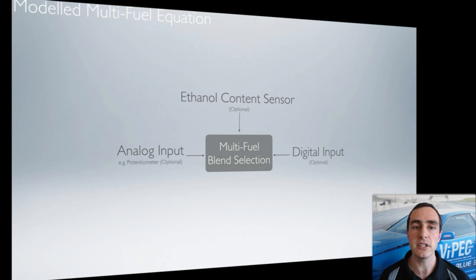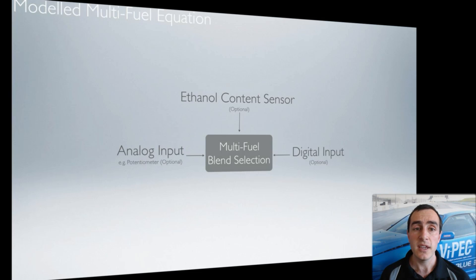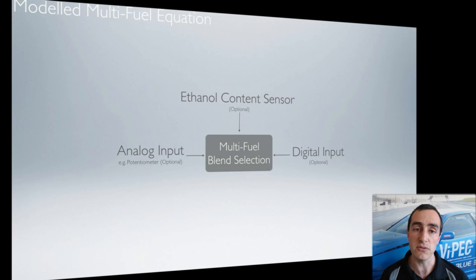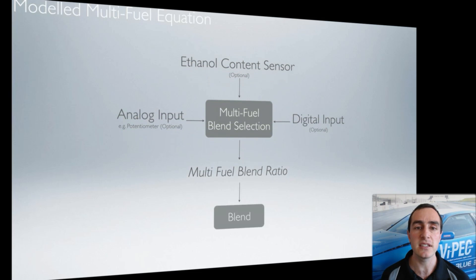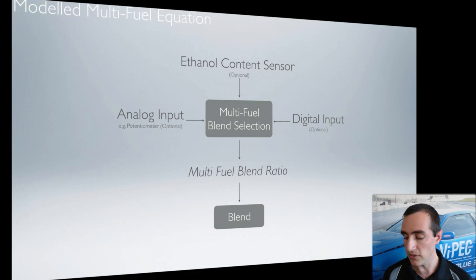The third option is a digital input switch, where one position is petrol and the other is your secondary fuel, probably ethanol. This suits a situation where you might drive to the track on petrol, and once you get there, drain your fuel, put in ethanol for your race, and switch the switch to tell the ECU you're now using ethanol. The ECU then has the correct blend information and uses it in the multi-fuel equation to give the correct amount of fueling.